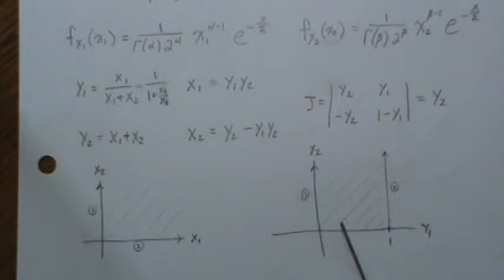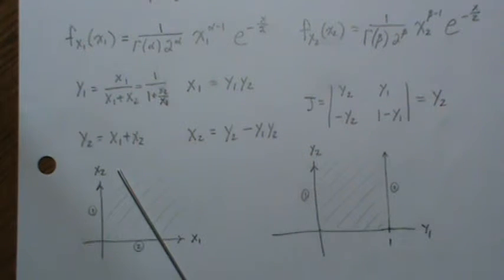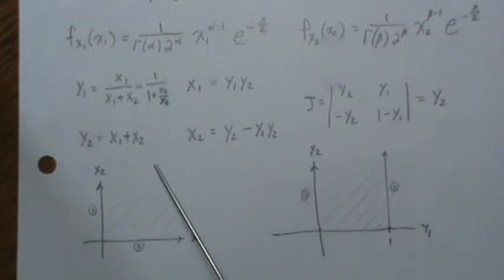So now what I like to do is create a picture to help illustrate. Since we're going to have to integrate out Y2, I want to know what region I'm integrating out. Since we're gamma and they're independent and they're both positive, here's our region that is being mapped to the Y1 and Y2 world.